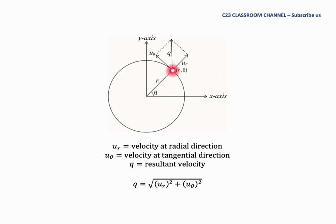...also has the component velocity because we have a radial direction here and the angle of theta here. We could have the component velocity of radial direction and we write as u_r, and the tangent of the velocity at this angle, so we call it the tangential velocity, so we write as u_θ. And the resultant velocity we could write...